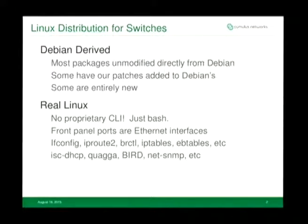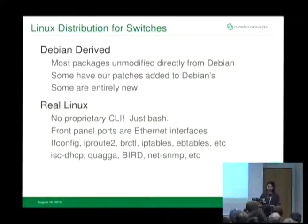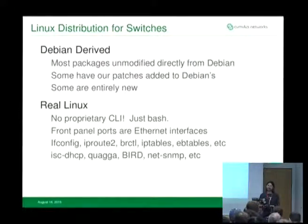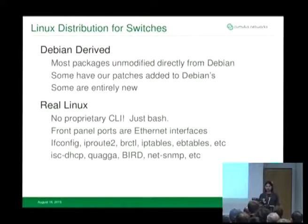If you're familiar with common network switch operating systems like proprietary ones like Cisco's NXOS or Juniper's Junos, you probably expect a network switch to have some sort of weird CLI with a bunch of commands and limited functionality. Cumulus Linux is not like that at all. We have no proprietary CLI. The CLI is bash. If you SSH into the switch, you just get a bash prompt. All of the front panel ports show up just as Ethernet devices, like ETH0, ETH1, and all the commands you know for configuring networking on Linux just work out of the box.